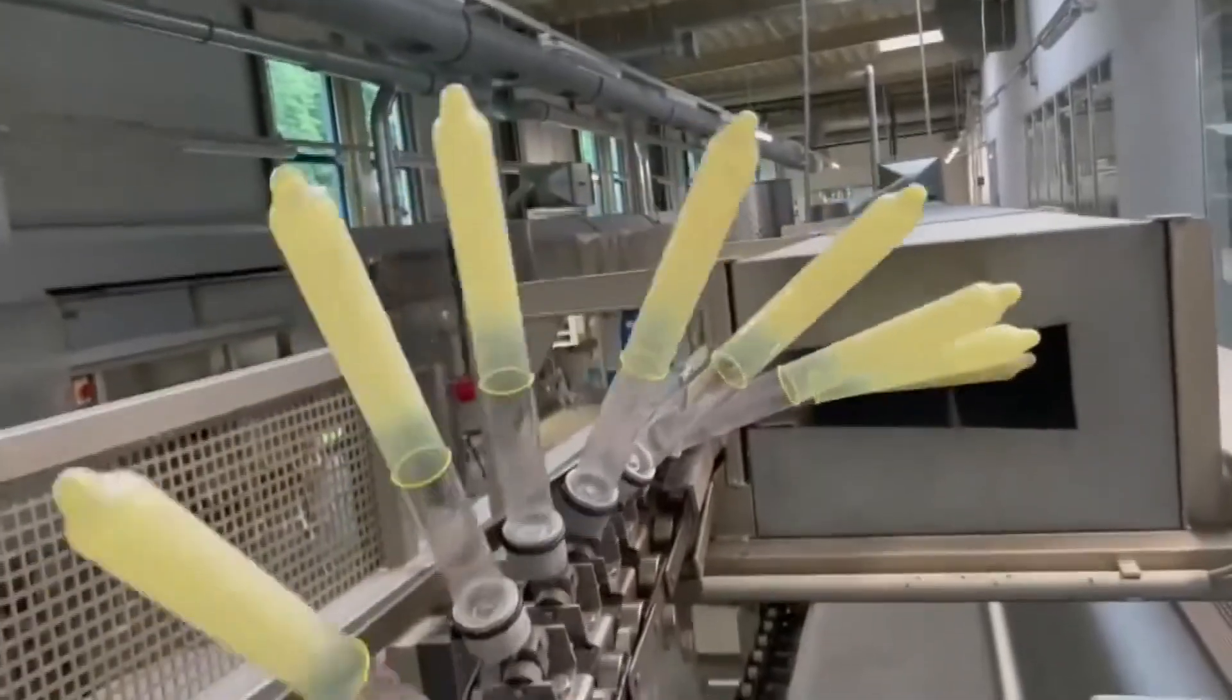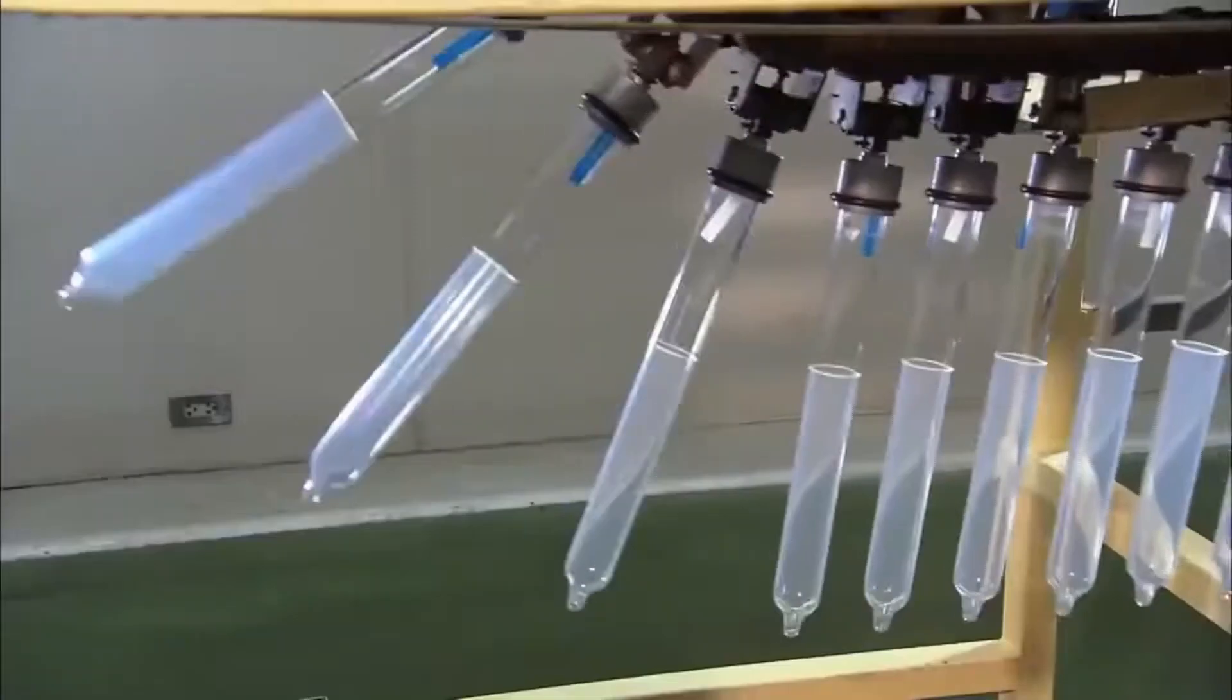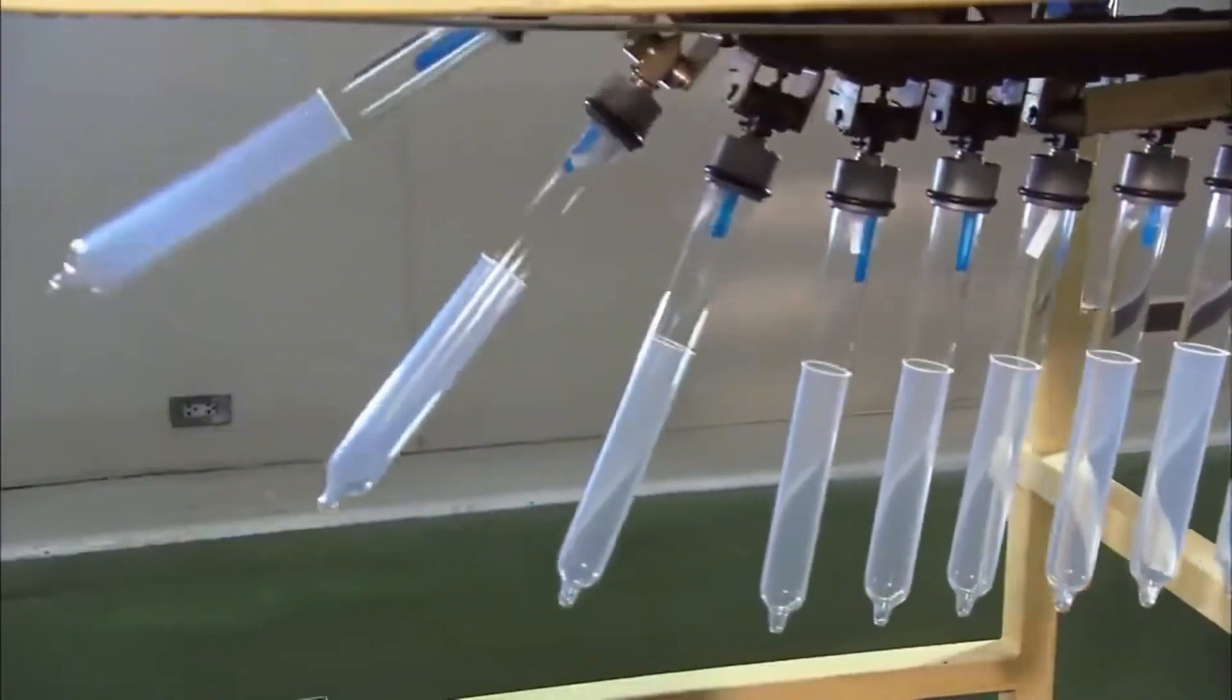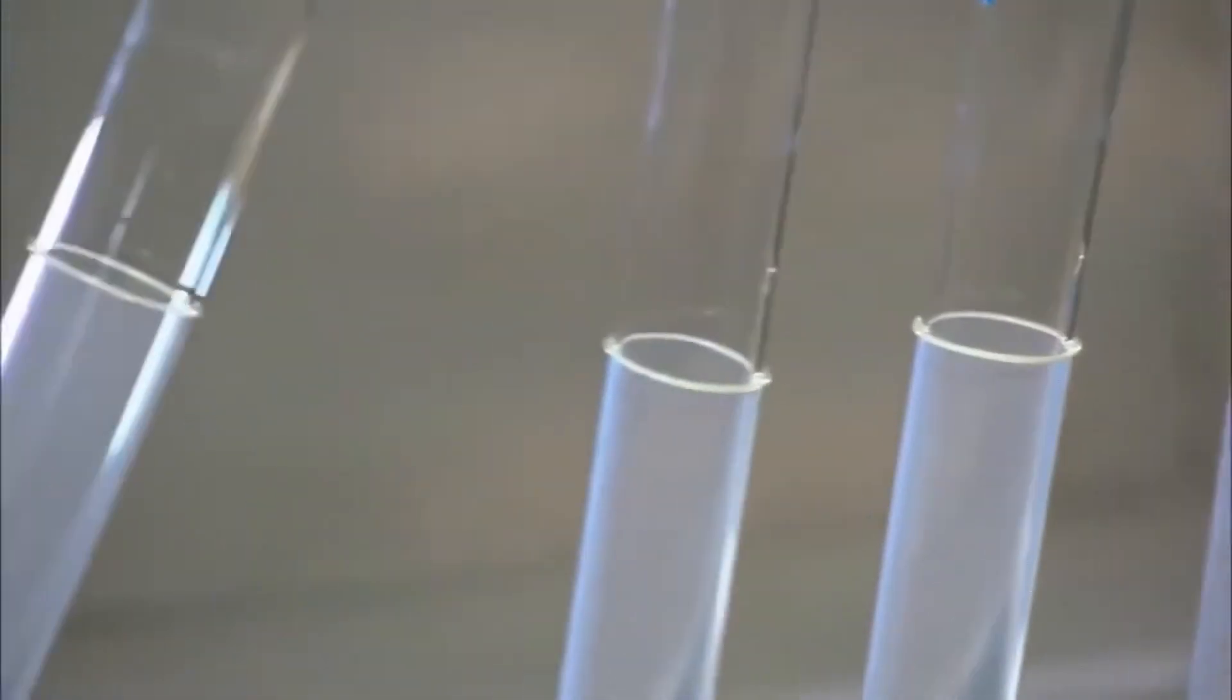In this phase, the condoms undergo heating in an elongated furnace, substantially amplifying their strength and elasticity by up to a 200 percent increase. This heating process also lends the latex a smooth, almost silky texture, a feature crucial for, well, you can probably deduce its importance.